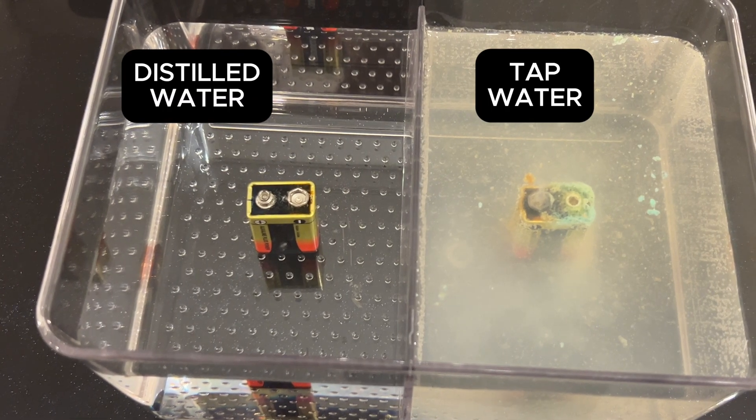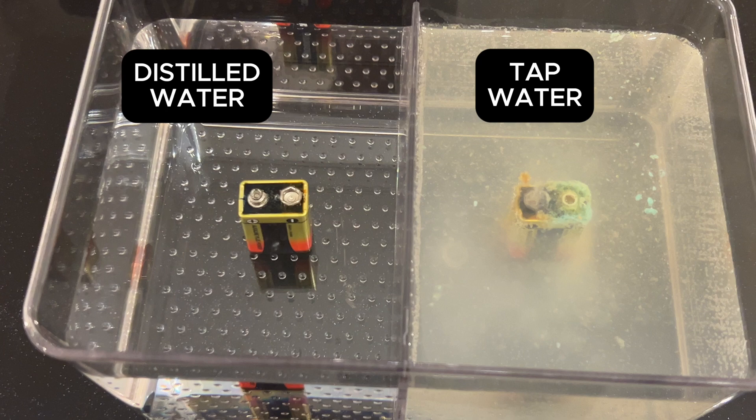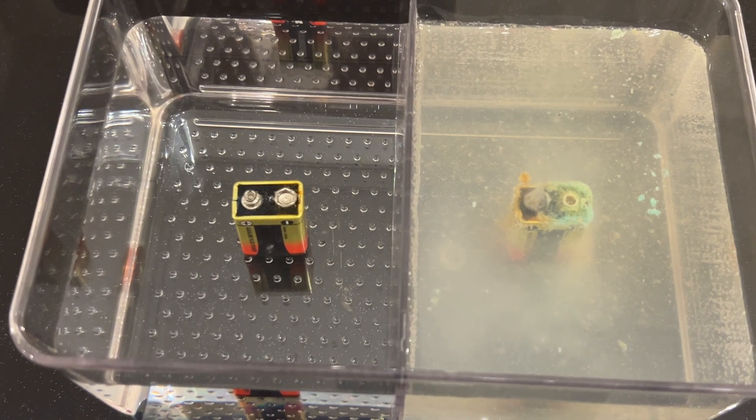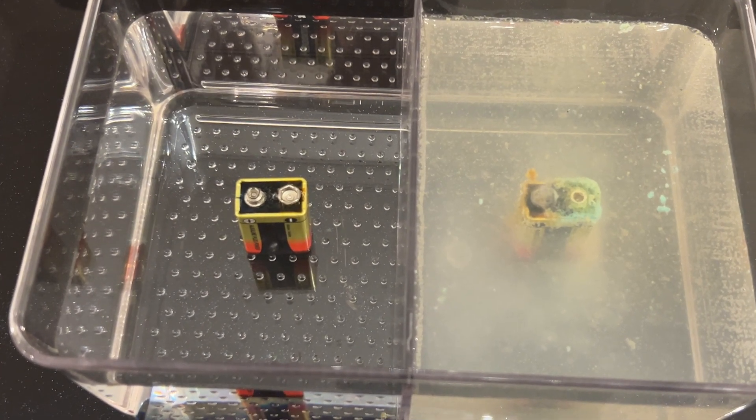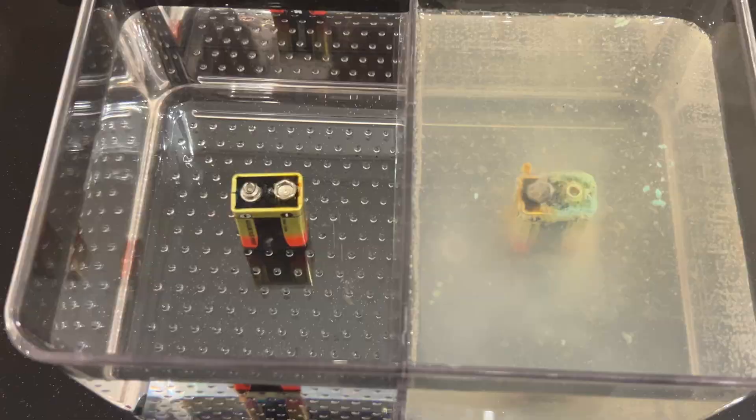Observe the stark contrast. In the distilled water compartment, there's virtually no activity. This is because tap water contains essential electrolytes that enable electron transfer between the electrodes.